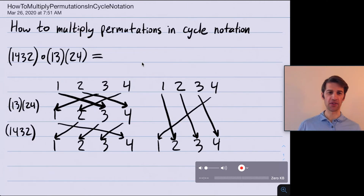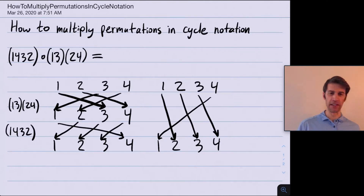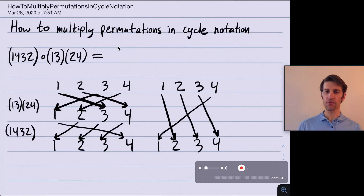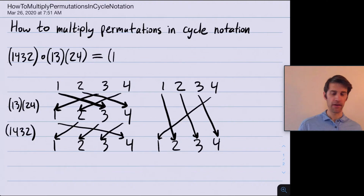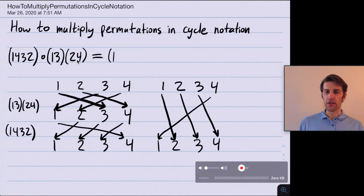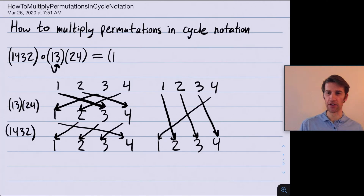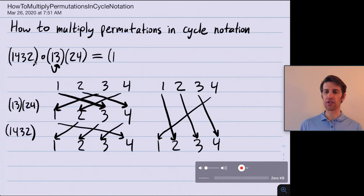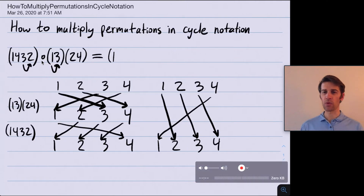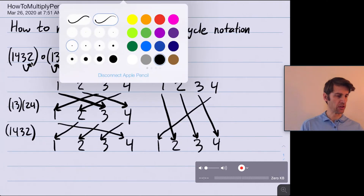Let me show you how to do this even without drawing the pictures. We want to see where 1 goes. This permutation (2, 4) doesn't move 1. This permutation maps 1 to 3, so currently 1 is being mapped to 3 — I like to draw this with an arrow underneath. And then this permutation takes 3 to 2. So overall 1 has gone to 3 and then to 2, meaning 1 maps to 2.